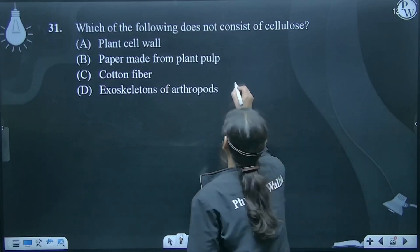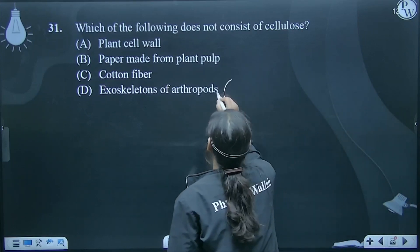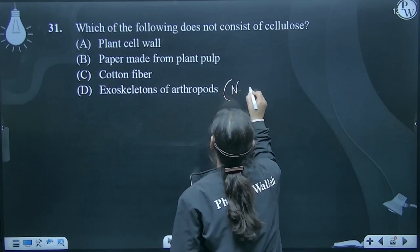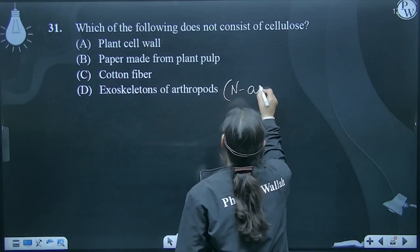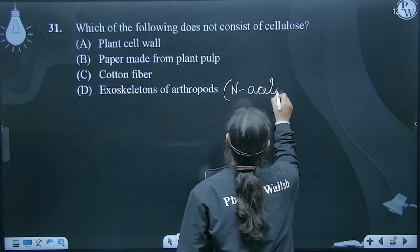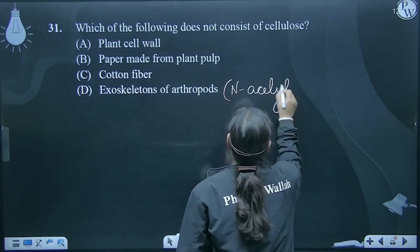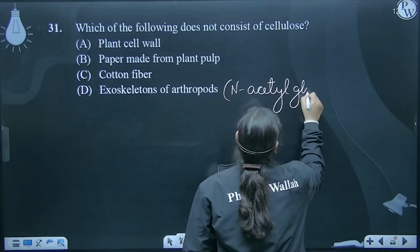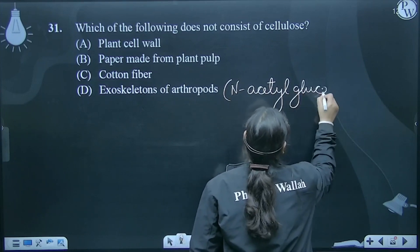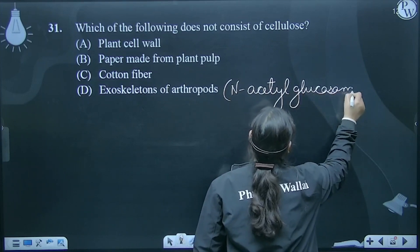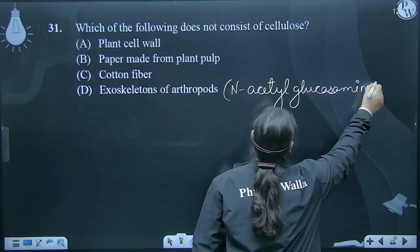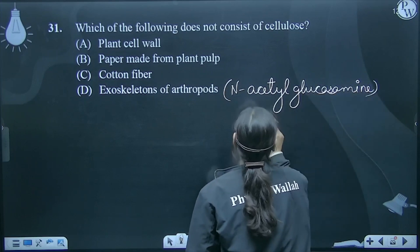Kyun? Kyunki yeh bhi homo polysaccharide hai, but is ki unit hai N-acetyl glucosamine. N-acetyl glucosamine — got it?